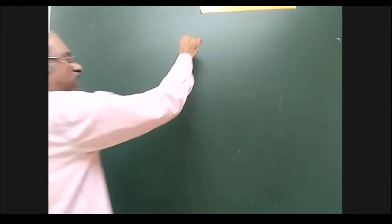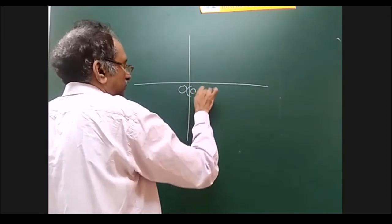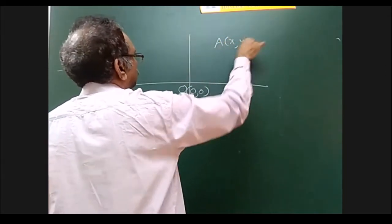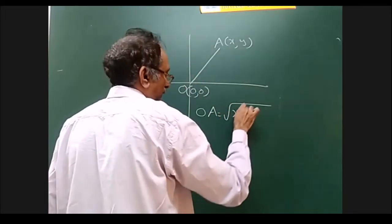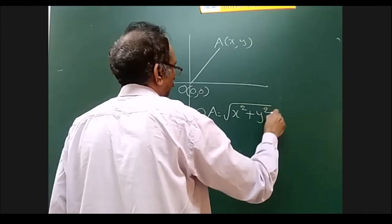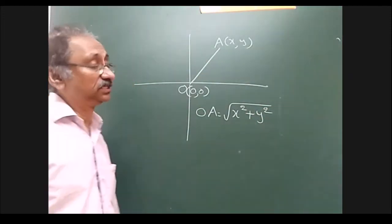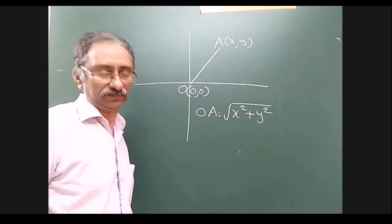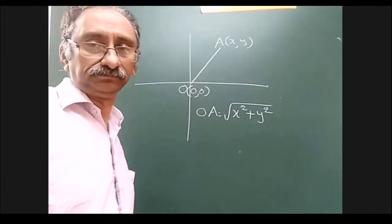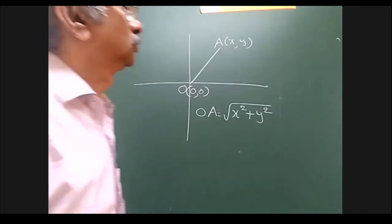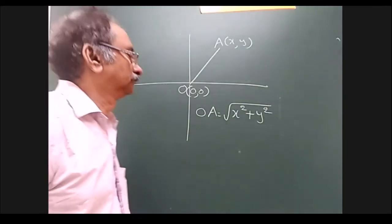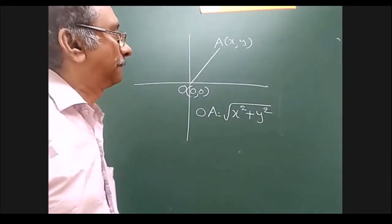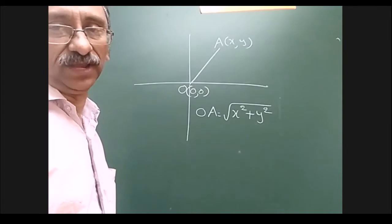That is the first formula of coordinate geometry and a very, very important formula. It will come at least some 10,000 times in these two years. Write down that first formula: the distance between points A(x1, y1) and B(x2, y2) is denoted by AB = √((x2 − x1)² + (y2 − y1)²).